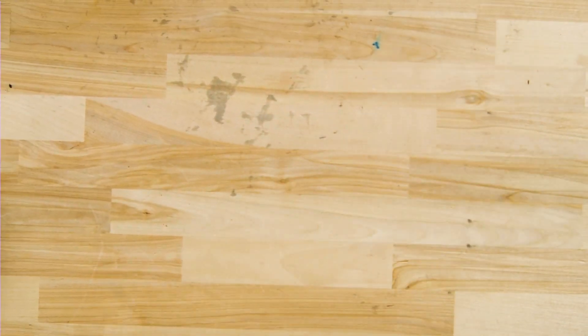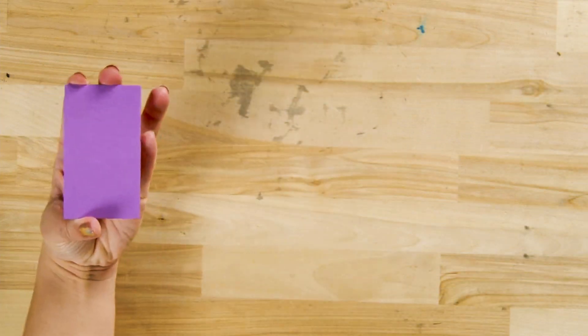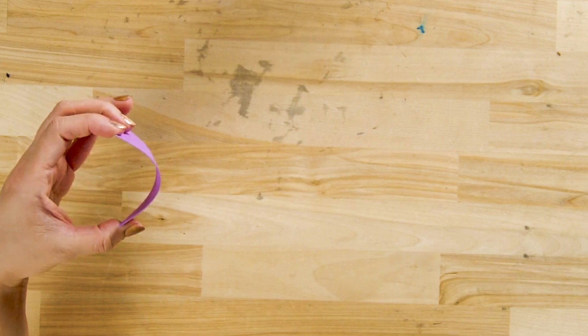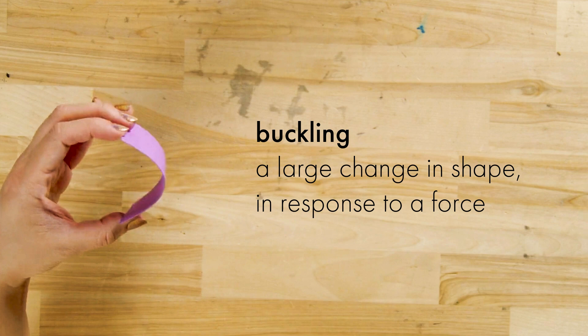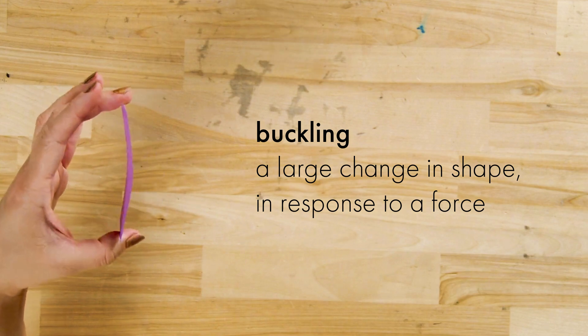I'll start by defining each of these terms. Here's a piece of cardstock, and I'm just applying a force with my hands, causing it to bow out once a certain force is achieved. Buckling is a large change in shape that happens in response to an applied force.